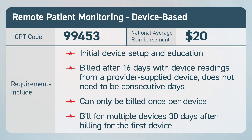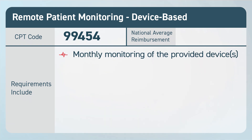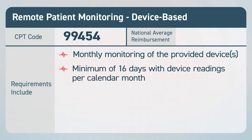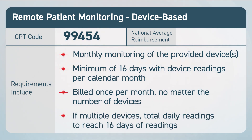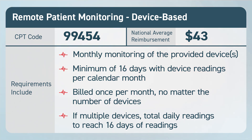The other device-based code for RPM is CPT code 99454. This code is for the monthly monitoring of the provided device or devices. A patient must take at least 16 daily readings per month in order to trigger this code. This code can only be billed once per month, no matter how many devices the patient is using. If the patient has multiple devices, you can total the daily readings from those devices to reach 16 daily readings. 99454 has a current national average reimbursement of $43.